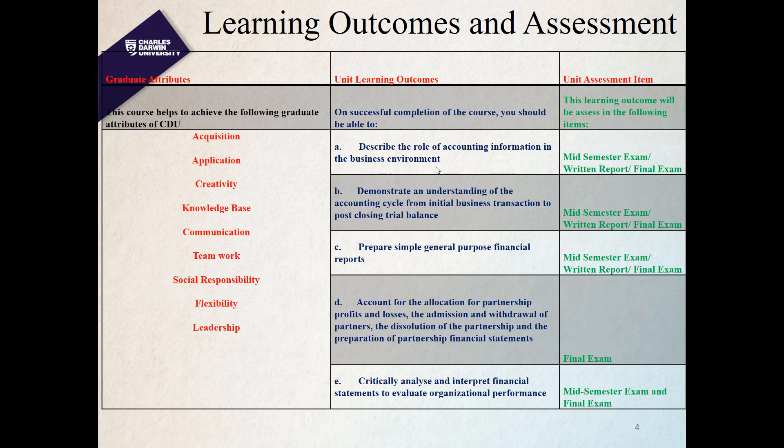The fifth learning outcome is to critically analyze and interpret financial statements to evaluate organizational performance. It is not enough to just record or read financial reports — students must digest the information to make informed decisions, such as comparing performance between companies or with industry averages using ratio analysis. The current assessment items are a mid-semester exam, a written report, and a final exam, which together are expected to achieve these learning outcomes and contribute to CDU graduate attributes.